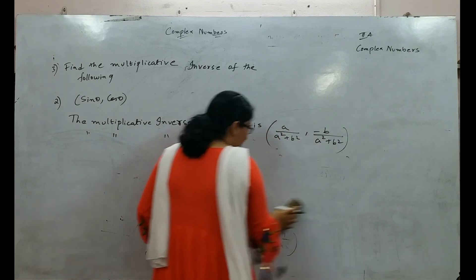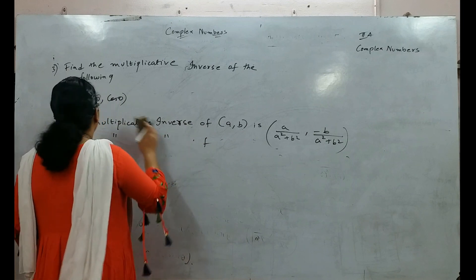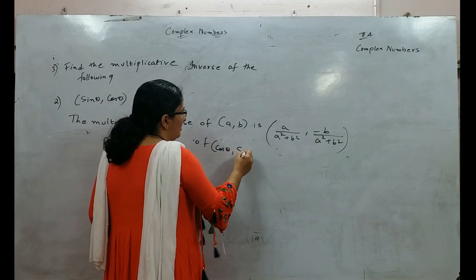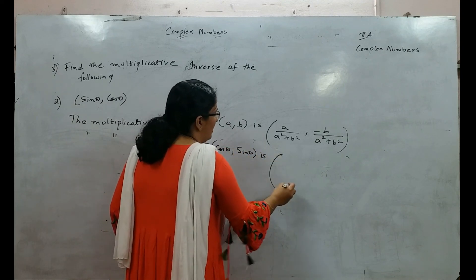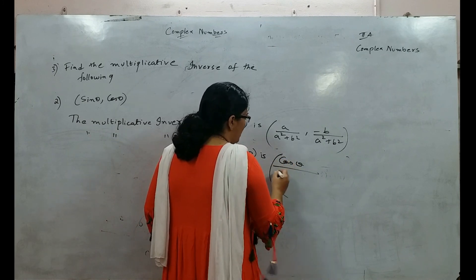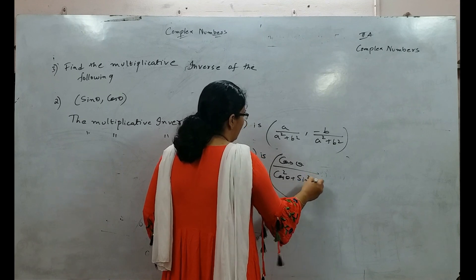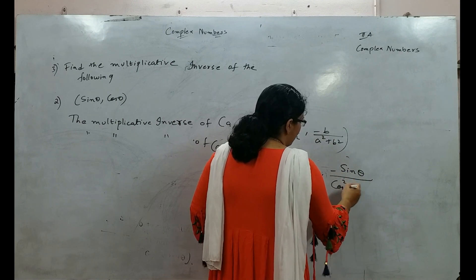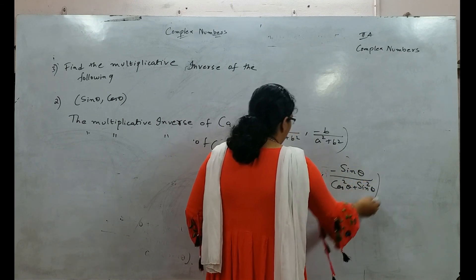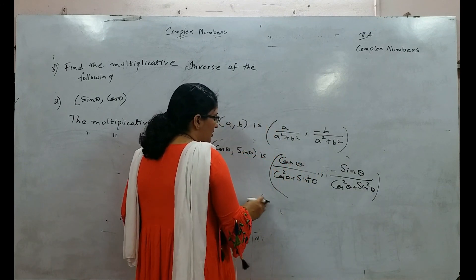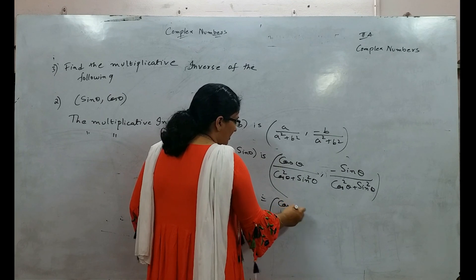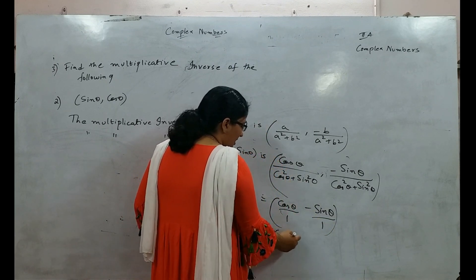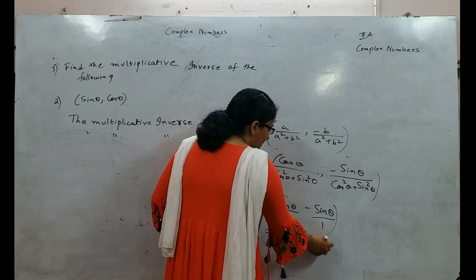Now for (cos θ, sin θ): the multiplicative inverse is cos θ by (cos squared θ plus sin squared θ) comma minus sin θ by (cos squared θ plus sin squared θ). Since cos squared θ plus sin squared θ equals 1, that simplifies to cos θ by 1 comma minus sin θ by 1, which is (cos θ, minus sin θ).